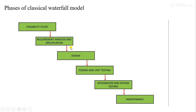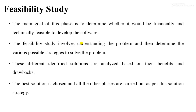One important thing to remember about the classical waterfall model is that we don't have any feedback path. This means if we made a mistake during feasibility study or during requirement analysis and specification, and we have already moved to the design phase, we cannot go back to requirement analysis and specification to correct those errors. From any later phase we cannot move to a previous phase. This is the major disadvantage of this model — there is no feedback path, so we cannot make changes or rectify errors made during previous phases.